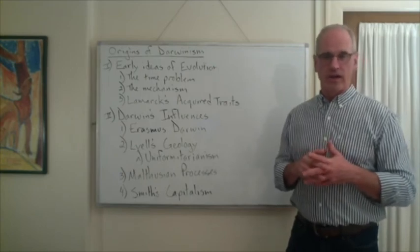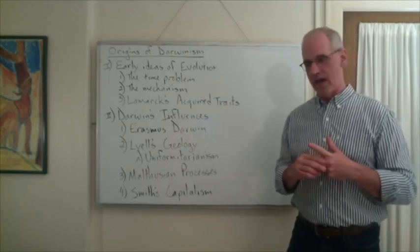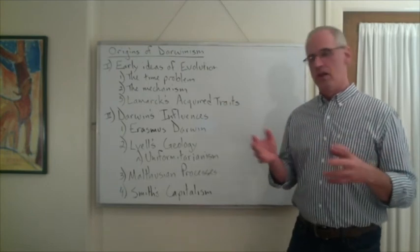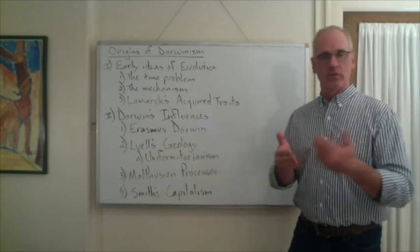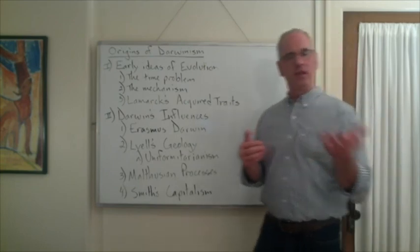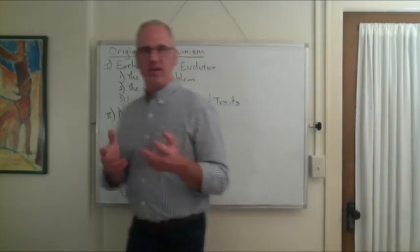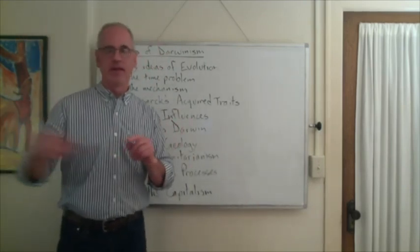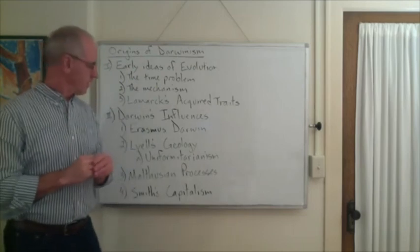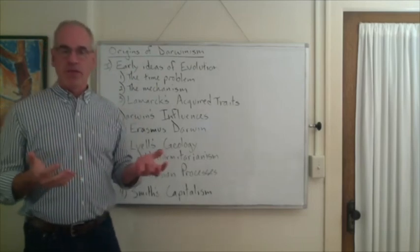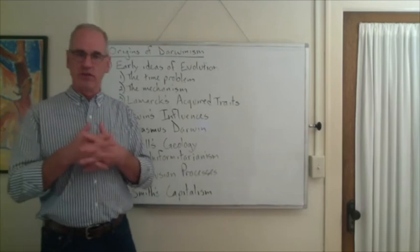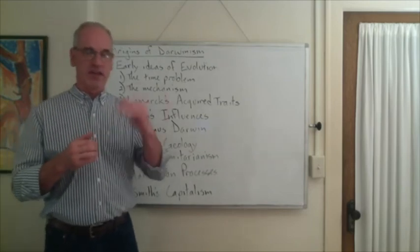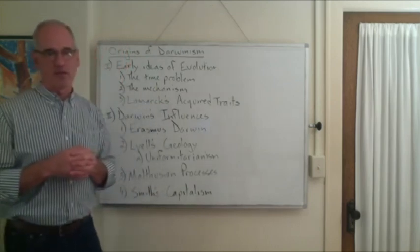Darwin starts to realize that this might be a key for explaining evolution. We know later that Darwin took exactly that and said that if you get random variations in a population, when push comes to shove and there's a short food supply, one individual might have some adaptation slightly better than another individual, which would explain why they survive and they don't. So from Malthus, Darwin gets this idea of intraspecies competition, especially for food supply, that might select and get rid of those who are less able to survive.